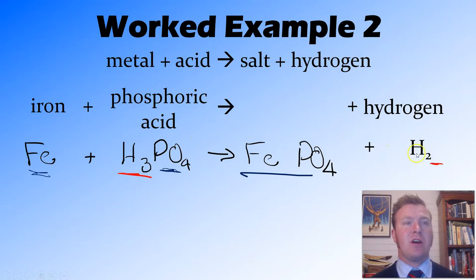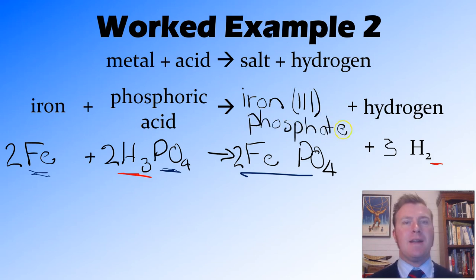So that's 2 iron, 2 phosphoric acids, 2 iron phosphates. So now instead of having 1 and a half hydrogen molecules, we've got 6 atoms on this side, which will be able to form 3 molecules of hydrogen on this side. And our equation is now balanced, so we'll be able to write up that our salt is that iron 3 phosphate. And that's that equation done.